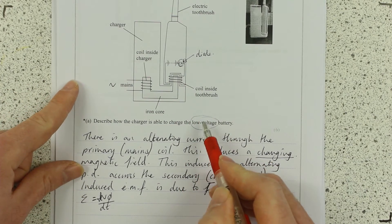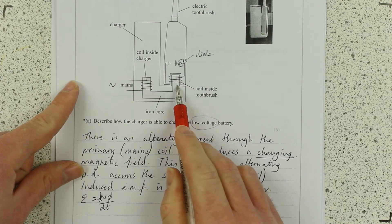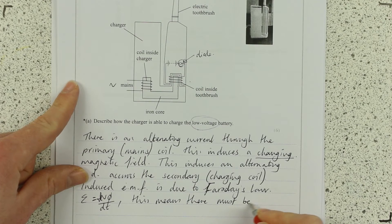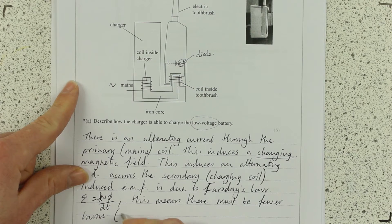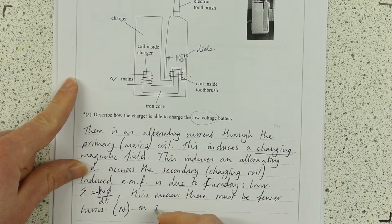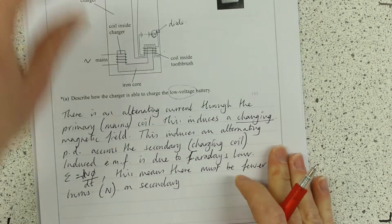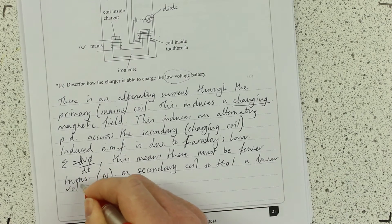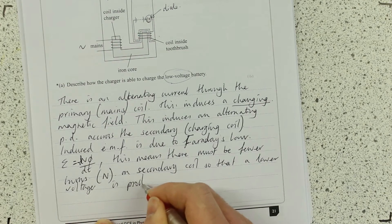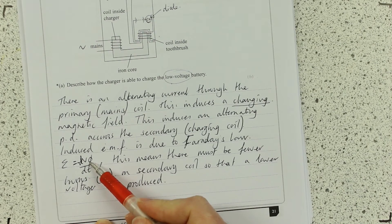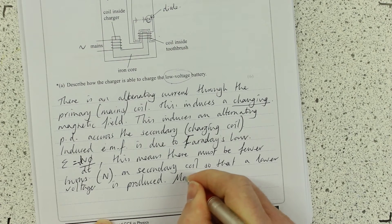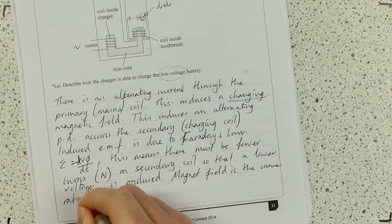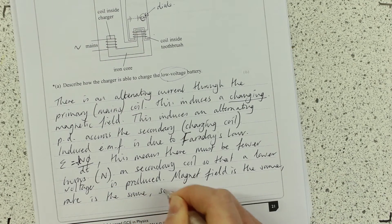Now, the two clues that I was talking about, what must occur so that we get a lower voltage out? This means there must be fewer turns, bracket N, on the secondary coil, or the charging coil, so that a lower voltage is produced. Everything else is the same. The magnetic field is the same. The rate is the same. So, N must change.